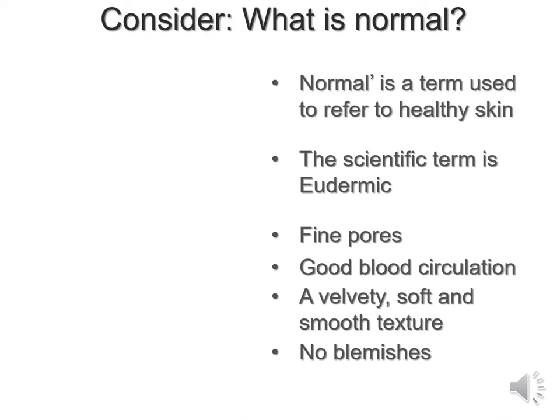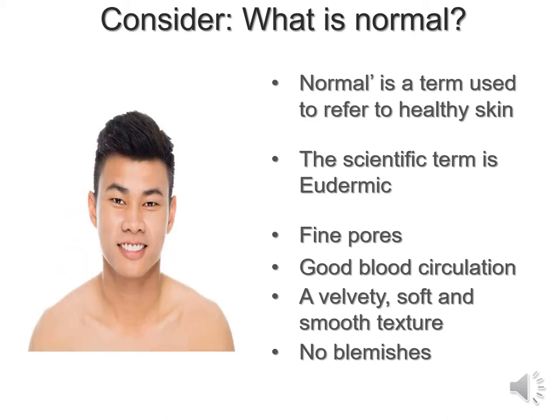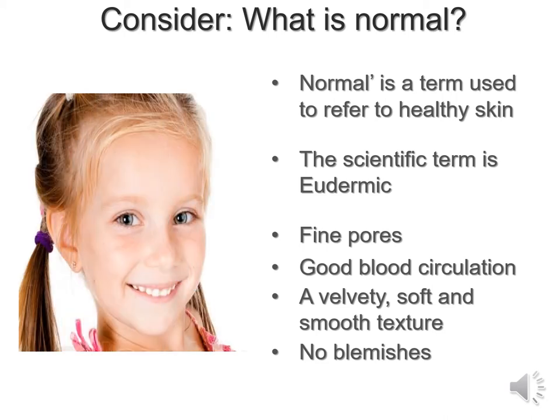Consider what's normal. Normal is essentially a term used to refer to healthy skin. The scientific term is eudermic — 'eu' meaning normal for everything. Normal skin has fine pores, good blood circulation, it's soft and velvety depending on how old you are, and it has a smooth texture without any blemishes or scars, typically.